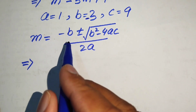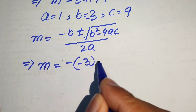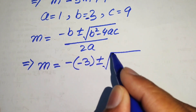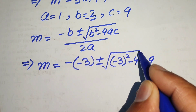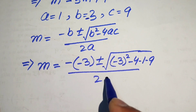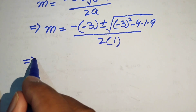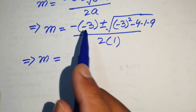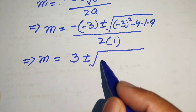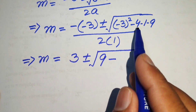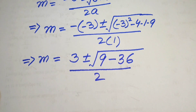Substituting: m equals minus (minus 3), plus or minus the square root of (minus 3) squared minus 4 times 1 times 9, divided by 2 times 1. This simplifies to m equals 3 plus or minus the square root of 9 minus 36, all divided by 2.